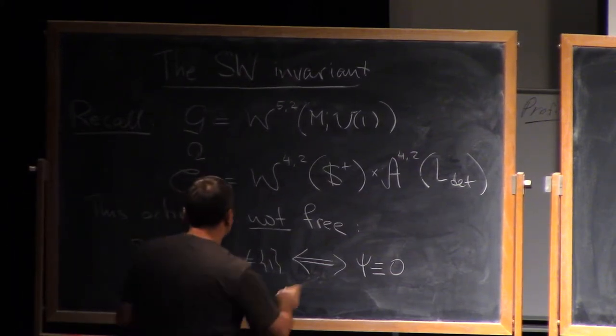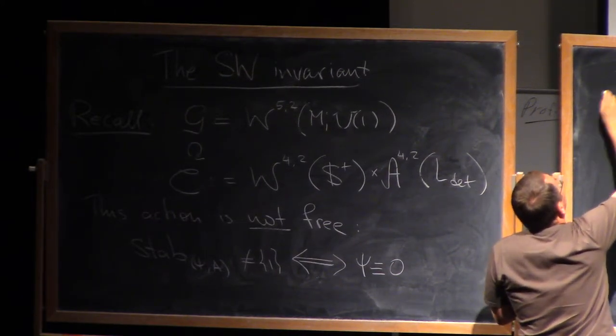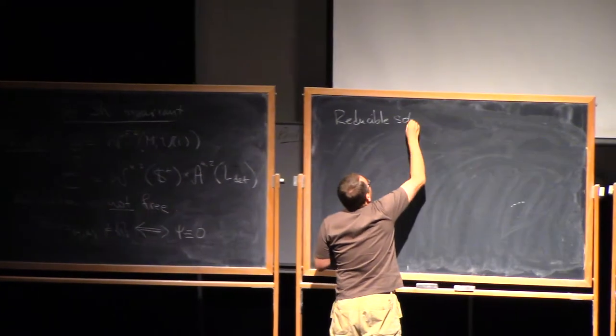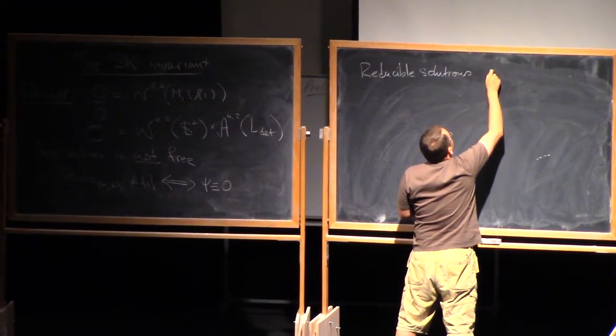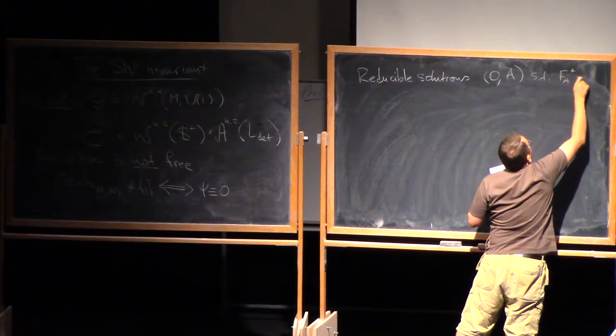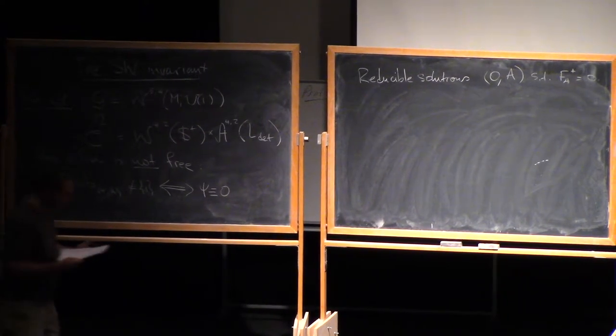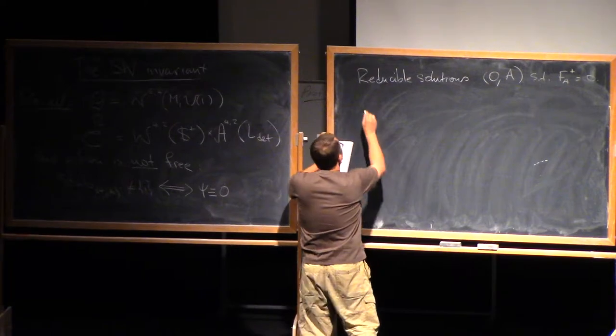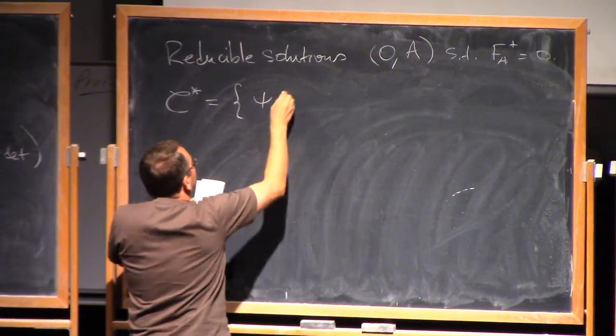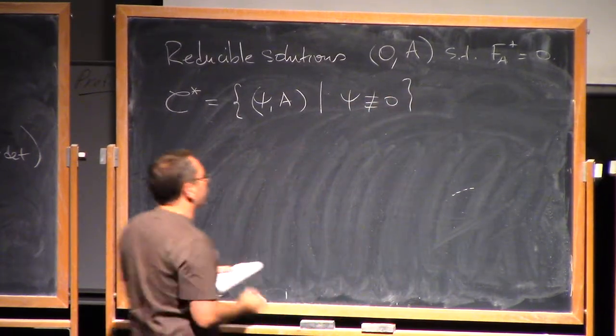If you have a solution with ψ identically zero, this is called reducible. These are points where the action of the group is not free, so we will discard those. I will denote by C* the space of all those points (ψ,A) where ψ is not identically zero.